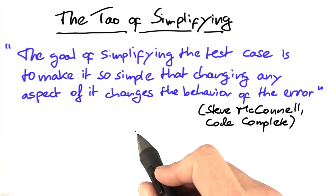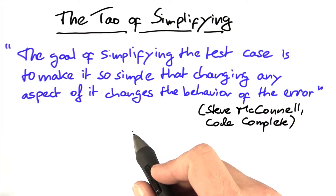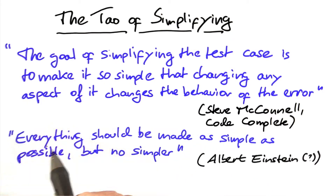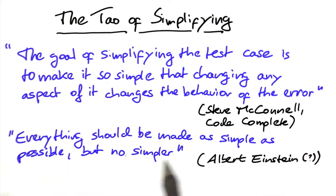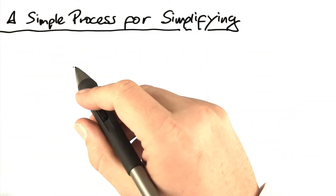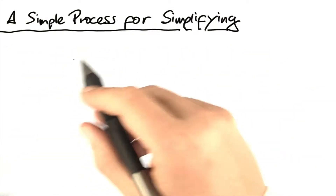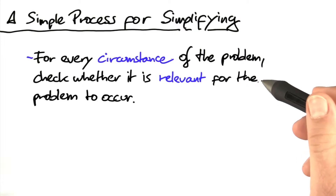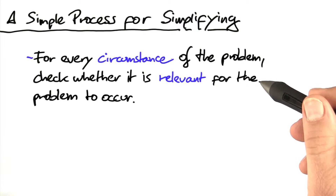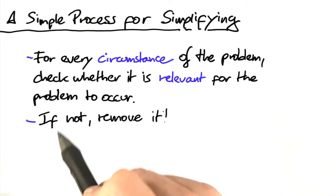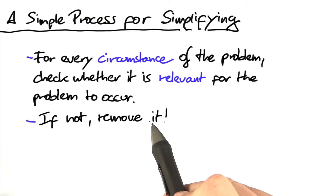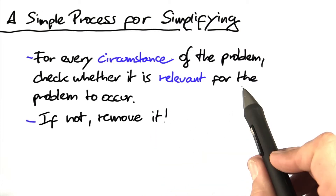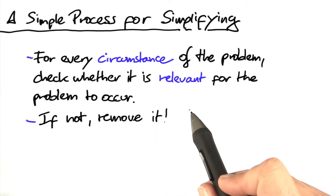There's also a nice quote which is usually attributed to Albert Einstein: 'Everything should be made as simple as possible, but no simpler.' And this, of course, calls for a simple process for simplifying. Namely, for every circumstance of the problem, check whether it's relevant for the problem to occur. If it is not relevant, remove it from the problem report or the test case in question.